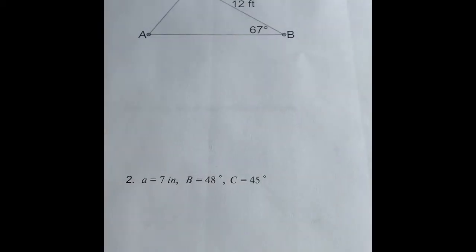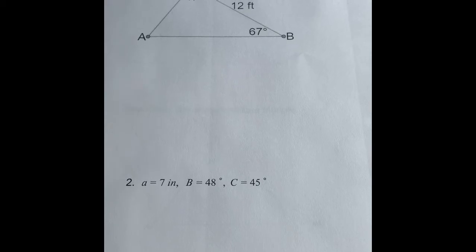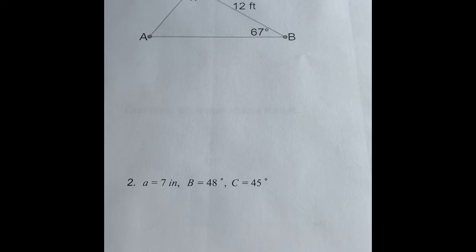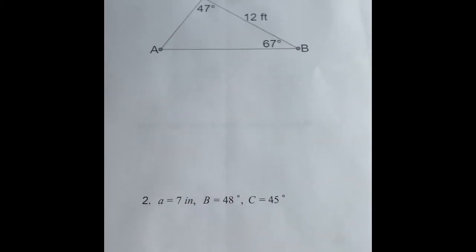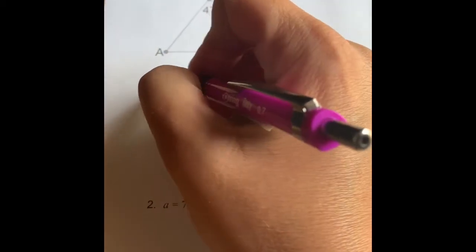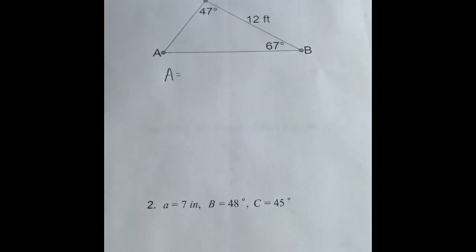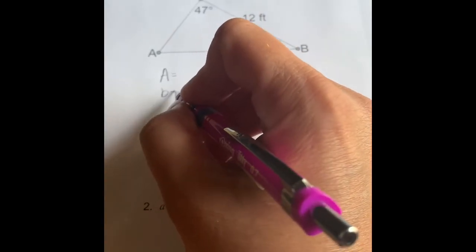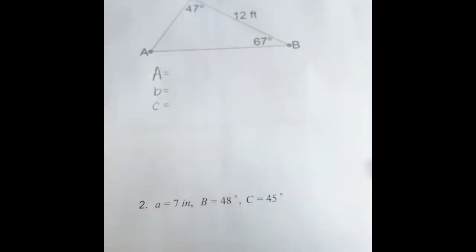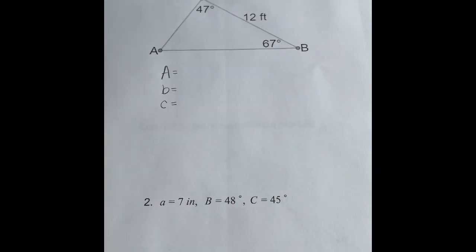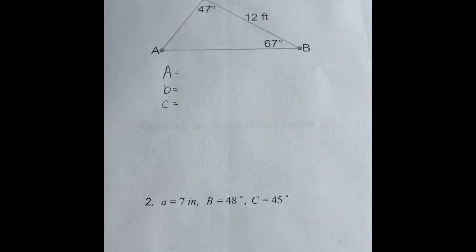So when we look at our first of two examples, this triangle's been drawn up for us. So let's see, we know angle C is 47 degrees, we know side A is 12 feet, and we know that angle B is 67 degrees. So that means that we need to find angle A, capital letter, we need to find side B, lowercase letter, and side C, lowercase letter. So those are the three pieces of information we need to find in order to solve this oblique triangle.